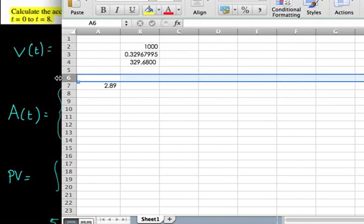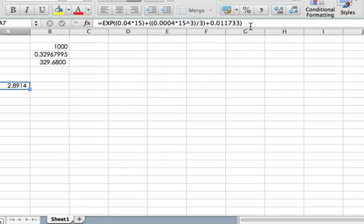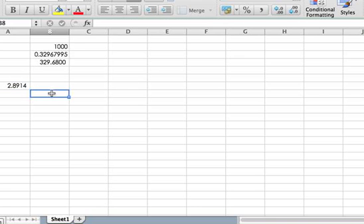I'm just going to see if I can bring out more decimal places. There we go, 2.8914, so I'm now just going to say equals our present value multiplied by A of 15, which is that bit there, equals 953.23 pounds.